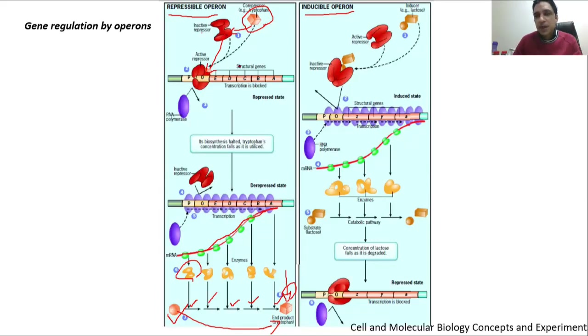If there is a lot of tryptophan in the system, that tryptophan binds with the inactive repressor. The inactive repressor is a repressor that cannot work on its own, but when it binds with tryptophan, it changes the conformation of the repressor and converts it into an active form. That active form can then bind with the operator, and once it binds, no gene will be expressed, meaning no more tryptophan will be created.